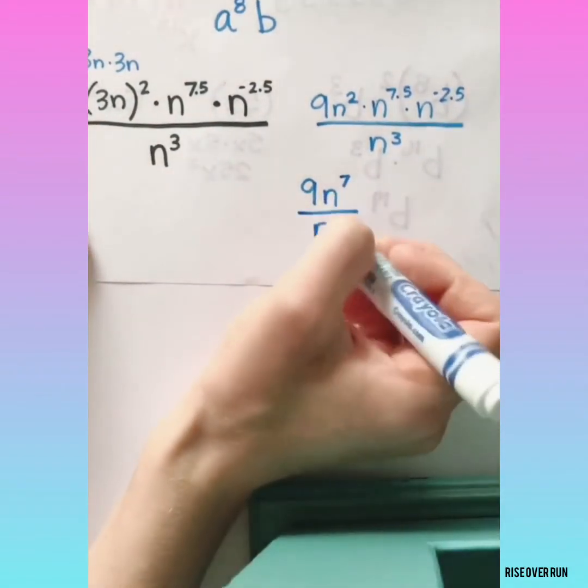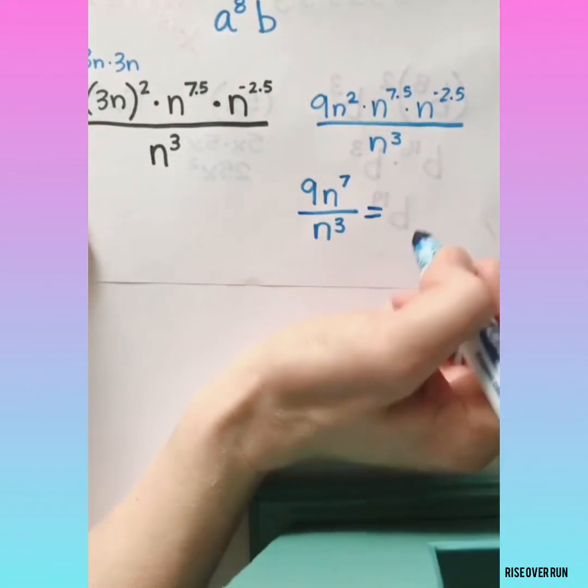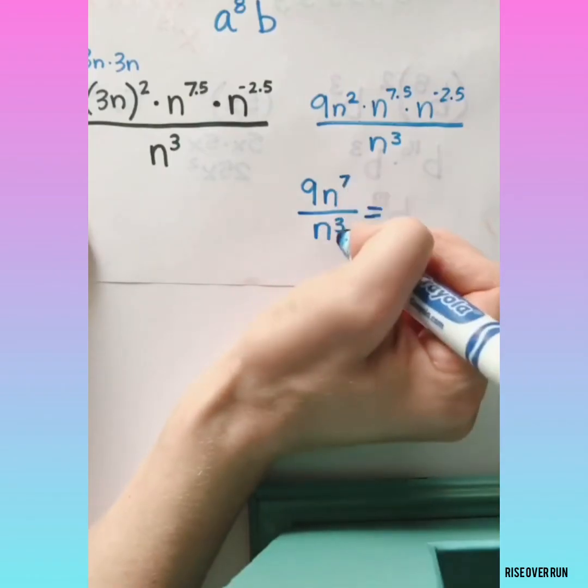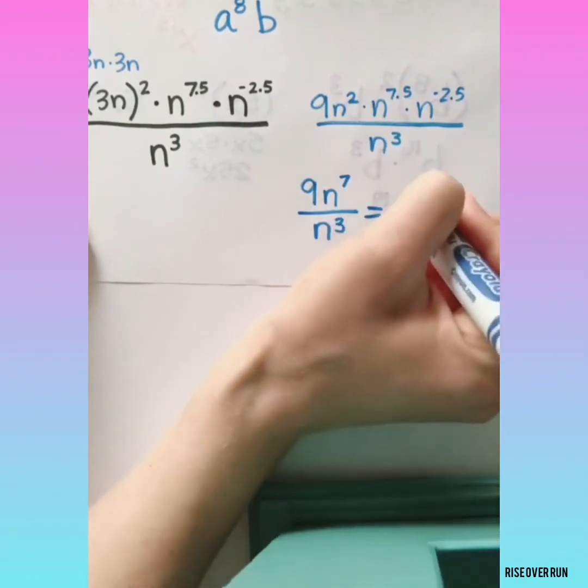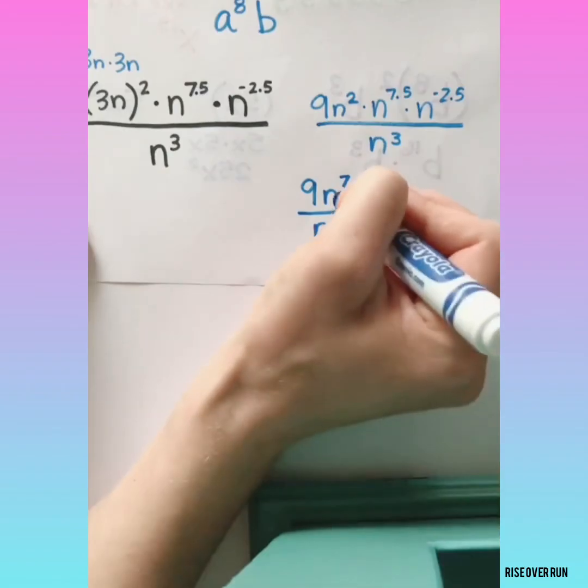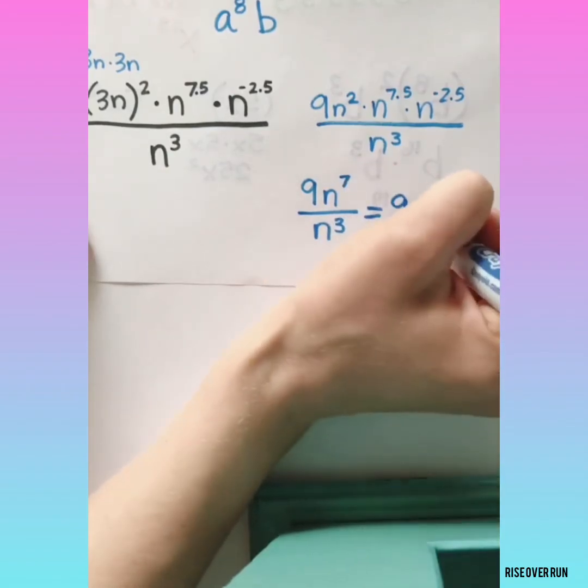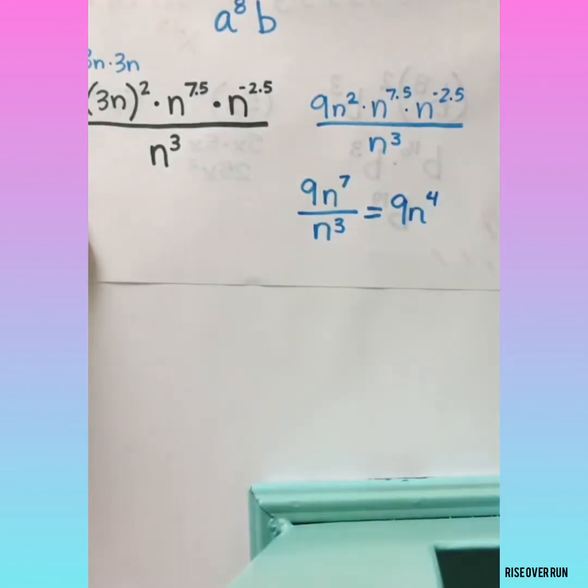Alright, now we're ready to use quotient rule for the n to the 7th over n to the 3rd. The coefficient is still there. Here we have 7 minus 3, giving us n to the 4th.